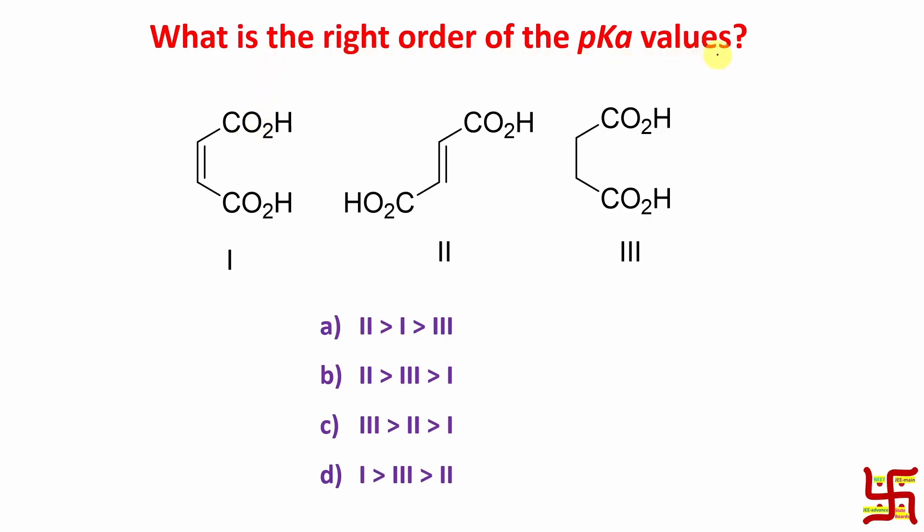The question, what is the right order of pKa values? By the way here three carboxylic acids are provided, more specifically dicarboxylic acid. So what is meant by pKa? Actually here I am asking pKa1.